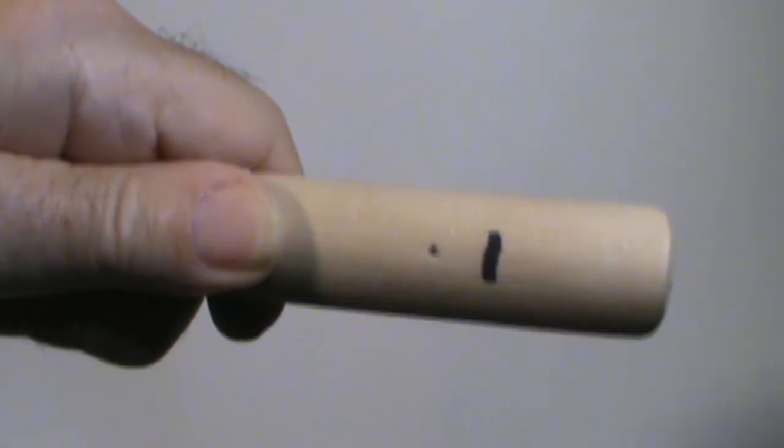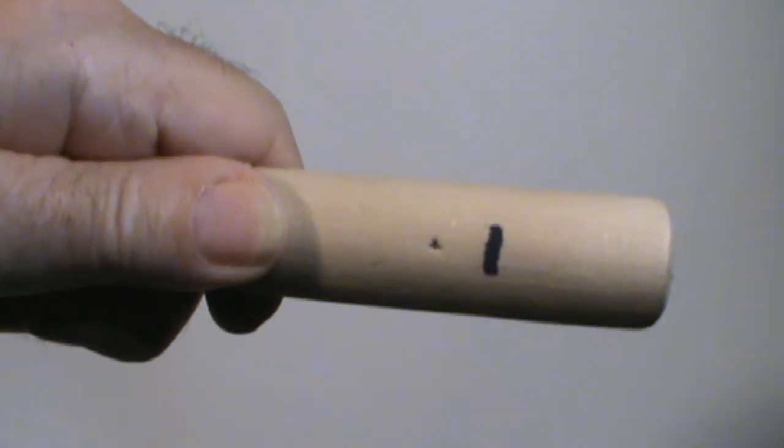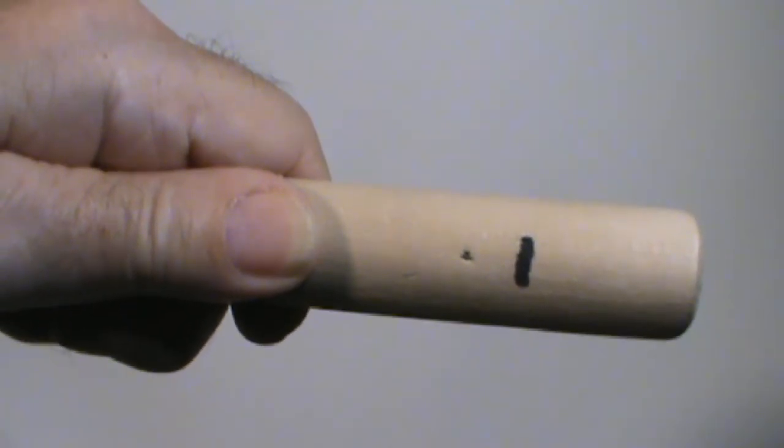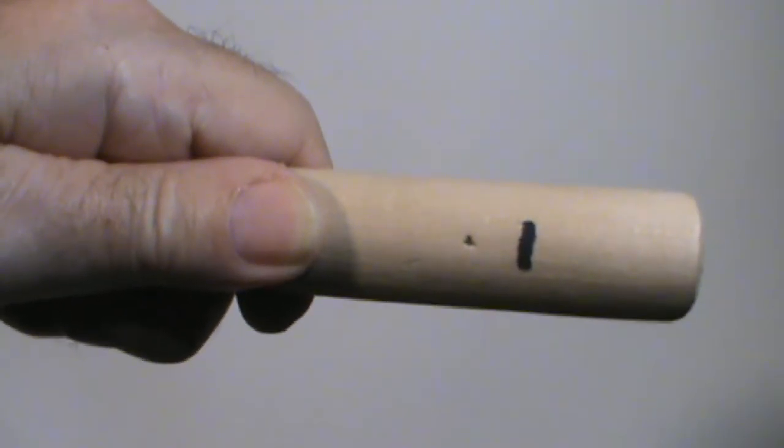Take a brad and hammer it through the dowel so that it secures the half-inch dowel inside it.